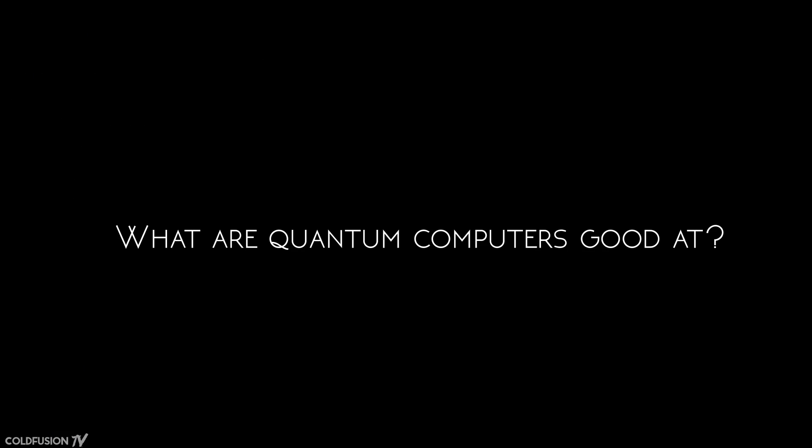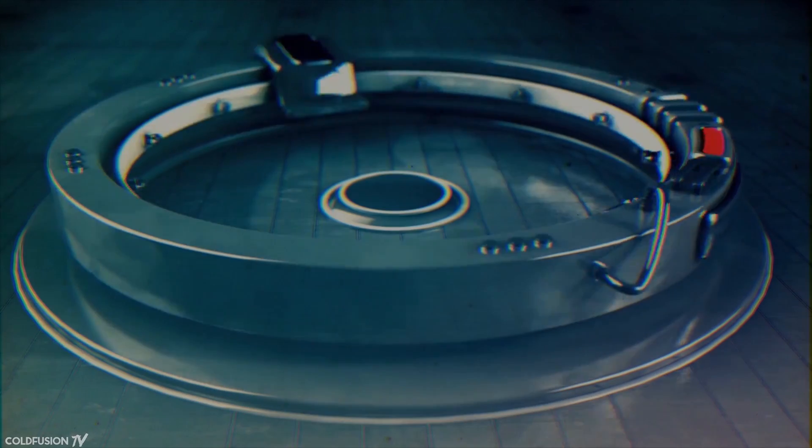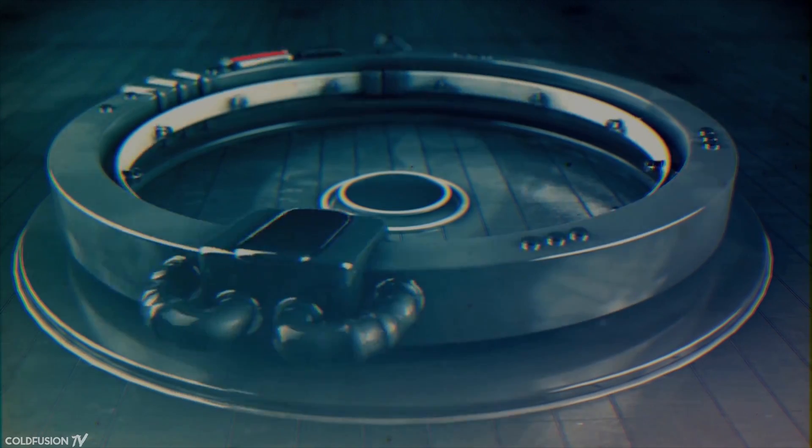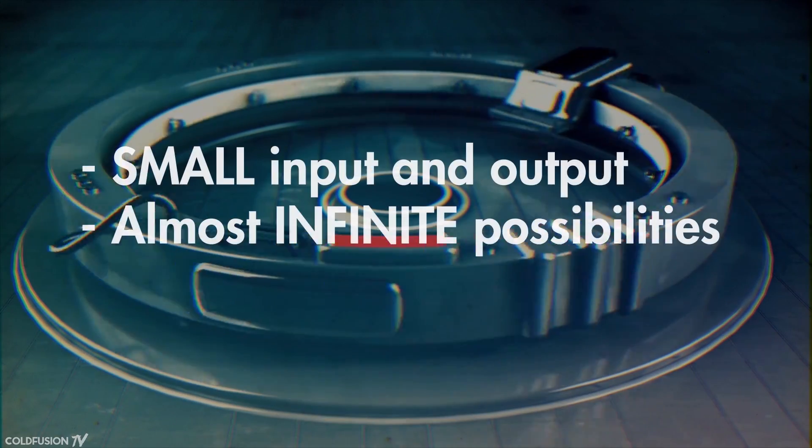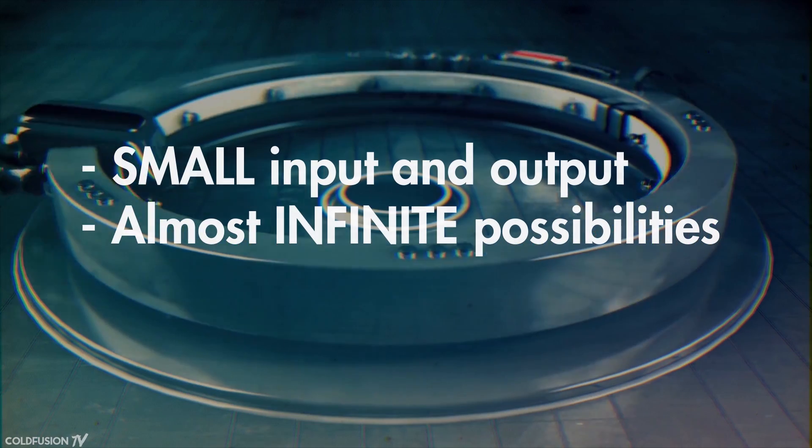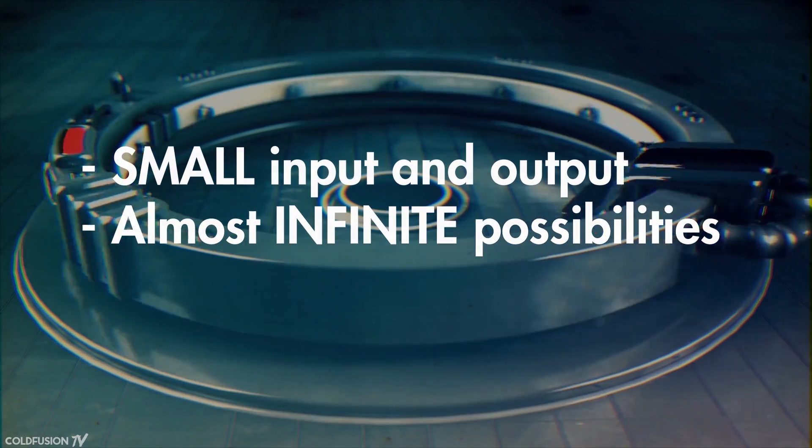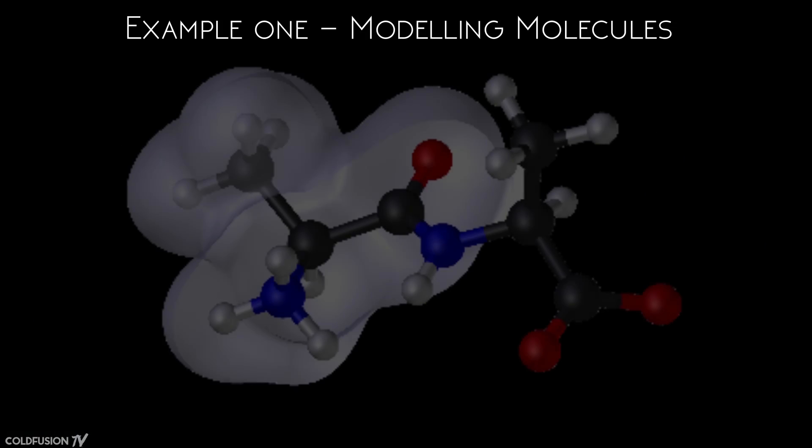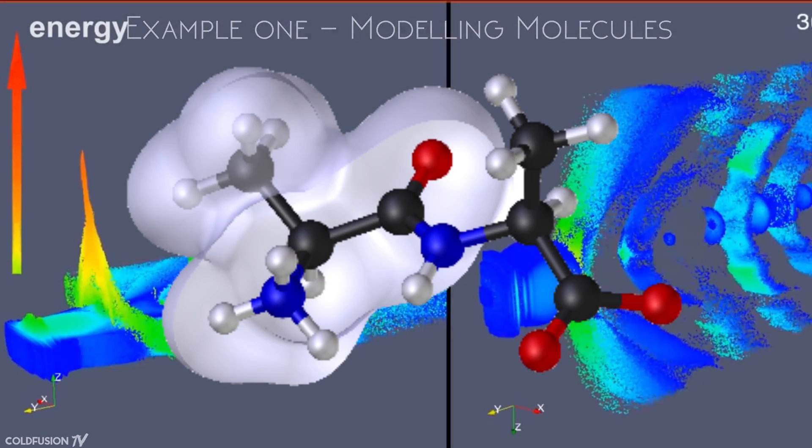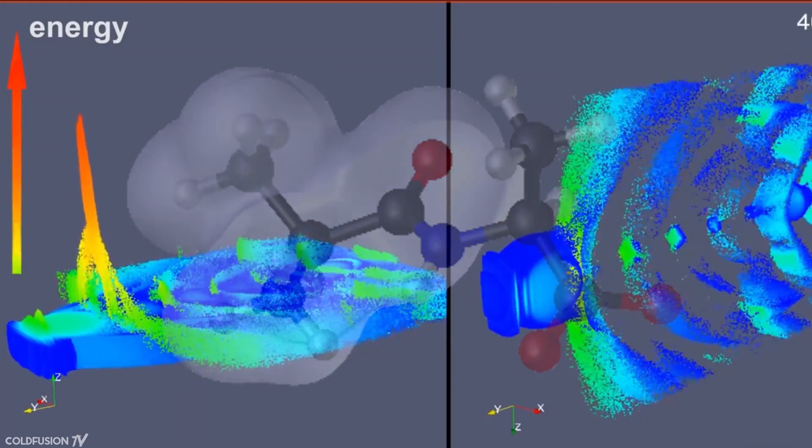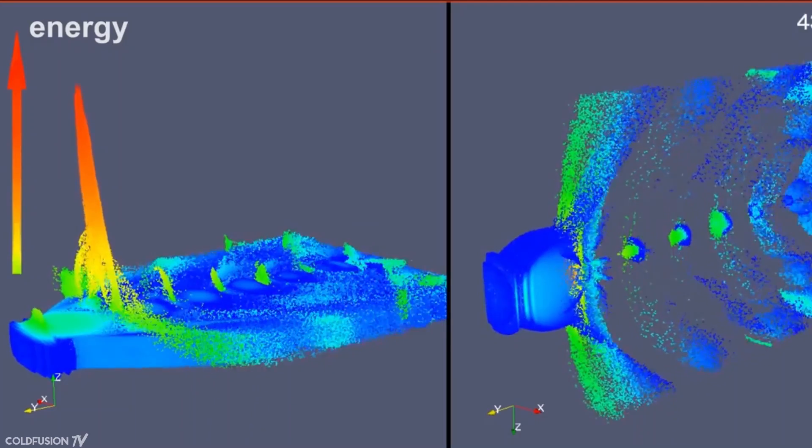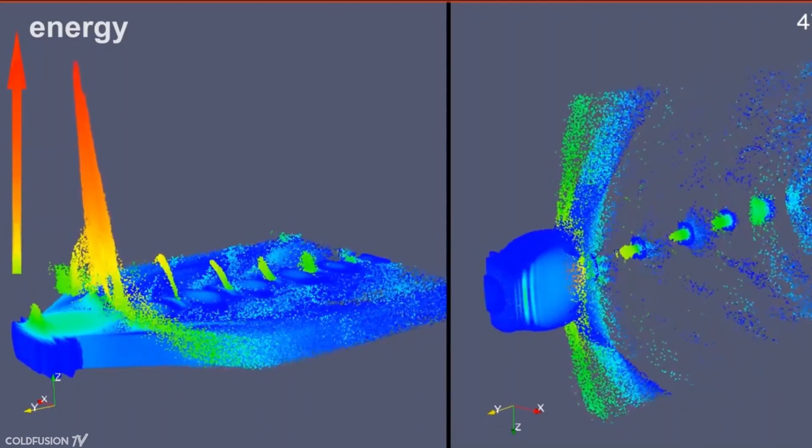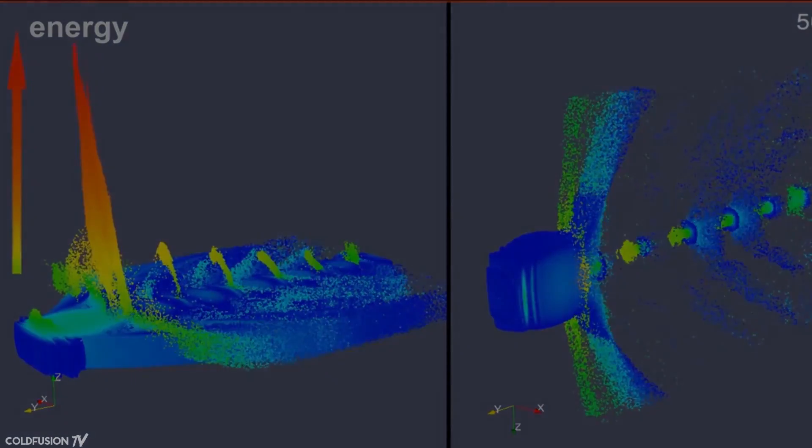So what are quantum computers good at? As it turns out, as far as we know, quantum computers are good at things that have a small input and output while having a vast array of possibilities. Let's take a look at a few examples to solidify this idea. So for modeling complex molecules, the input is the number of particles in their starting state, while the output is what happens after a given time. The possibilities of what happens in between that time are almost infinite.